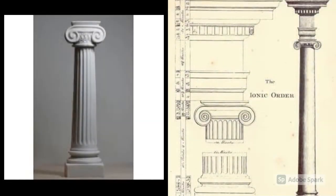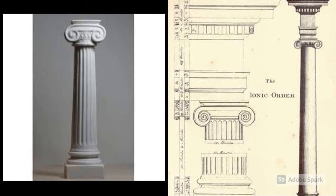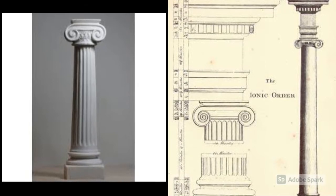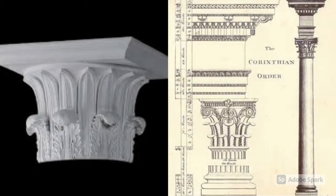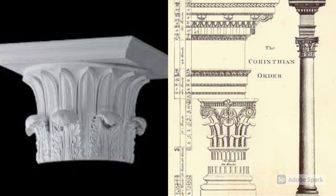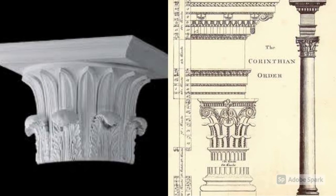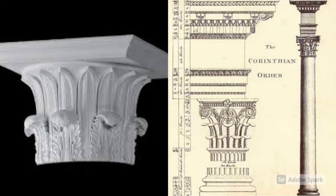The Ionic differs from the Doric in having more flutes and volutes in its decorative motif — volutes meaning scrolls. The Corinthian order is the most grand of the five orders. Its distinguishing characteristic is the striking capital, which is carved with two staggered rows of stylized acanthus leaves and four scrolls.